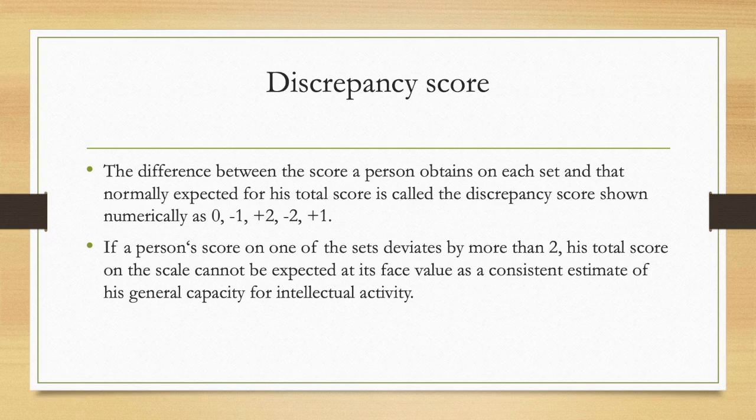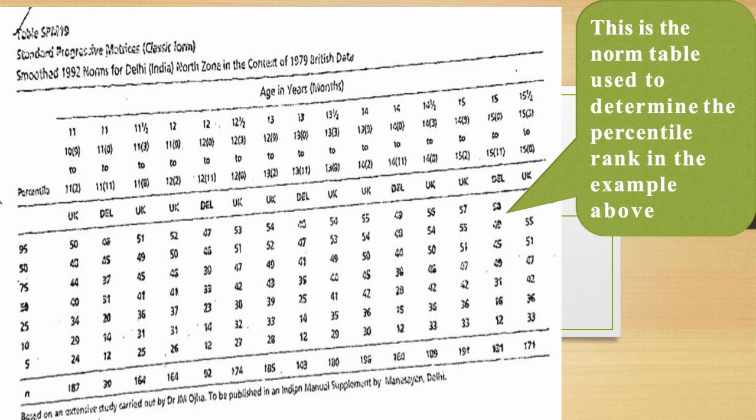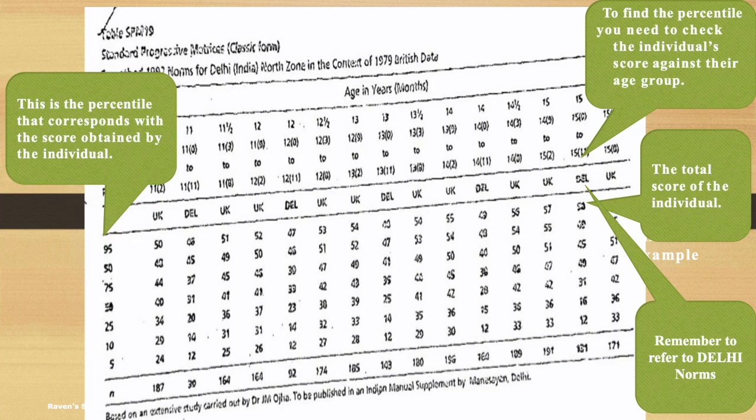Now we will convert the raw scores into percentile scores. In the norms table, first and foremost, find out the column which corresponds to your subject's age. My subject's age is 15 years, so I am taking this column, the norms for Delhi, India. Now my subject's score is 53, which is beyond 50. 50 is here, and I will see it corresponds with which percentile. It says 95th percentile, so the raw score gets converted to 95th percentile here.